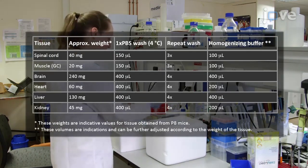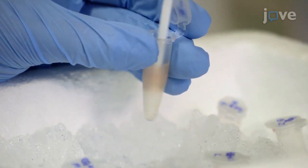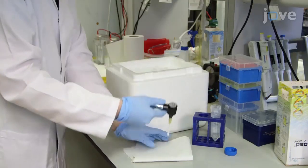Using a handheld electric homogenizer with a polypropylene pestle, homogenize the washed samples, rinsing the pestle in double-distilled water and drying with a clean tissue between samples.